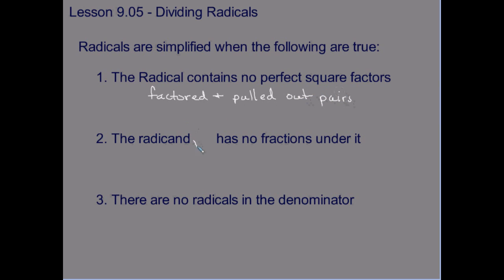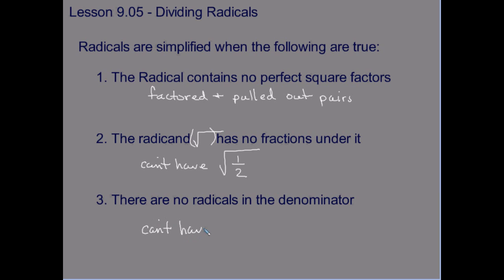The radicand, which is under the square root symbol, has no fractions under it — so you cannot have, for example, the square root of one-half — and there are no radicals in the denominator.